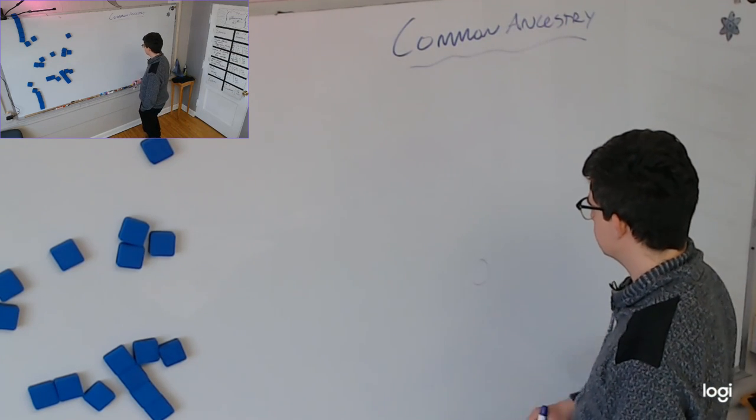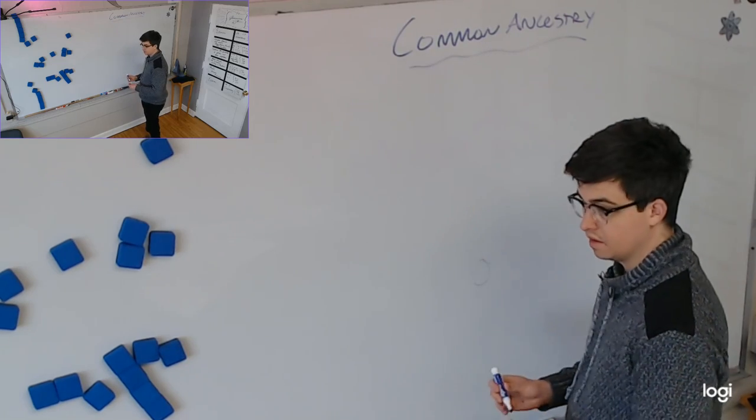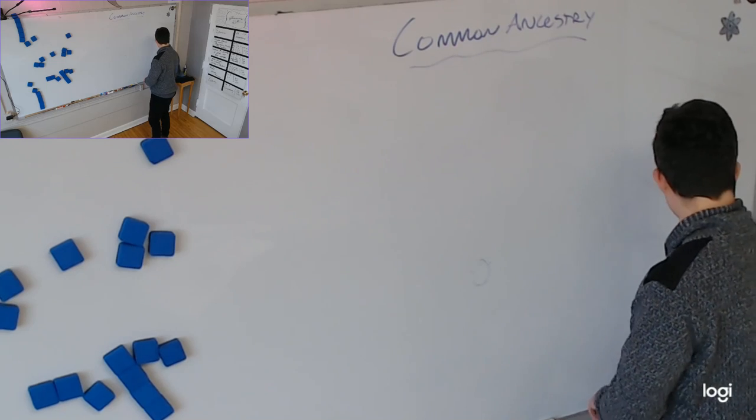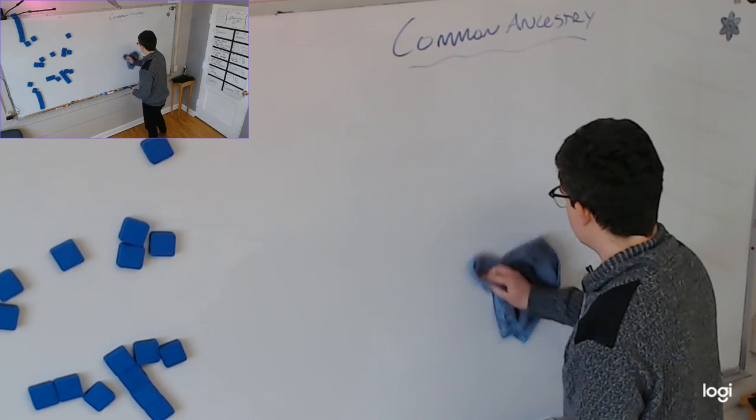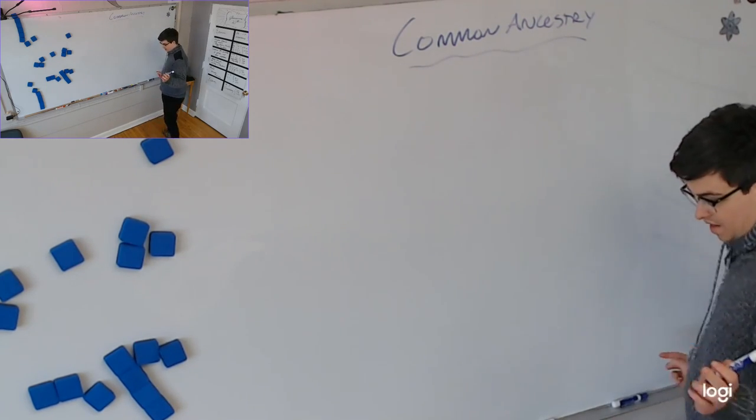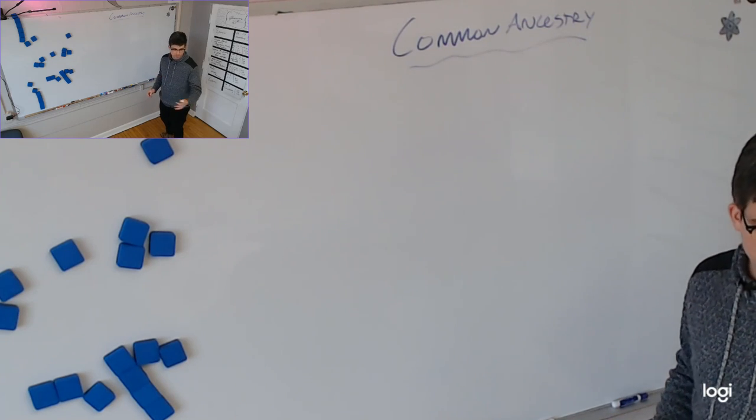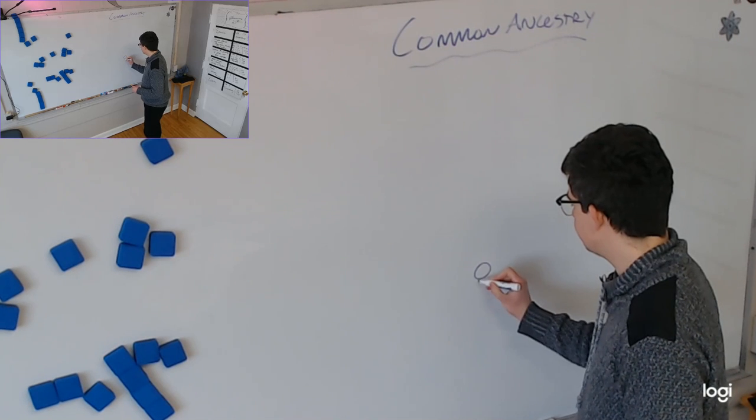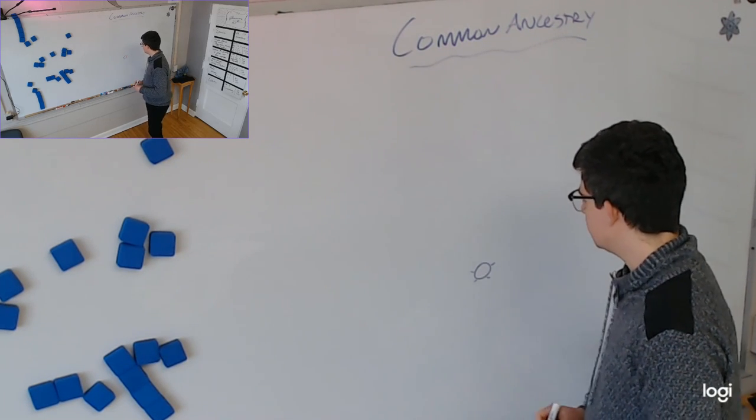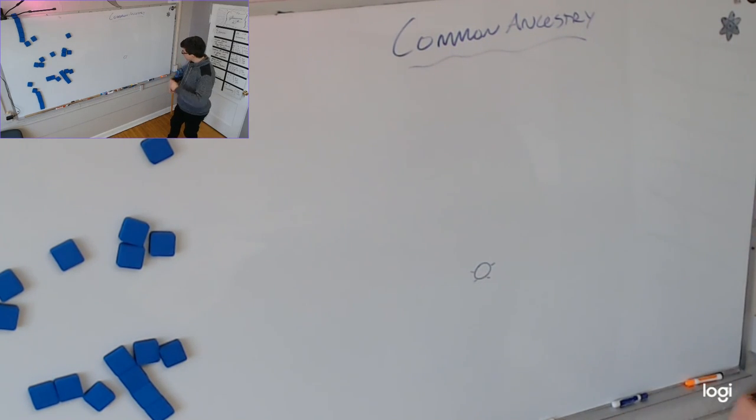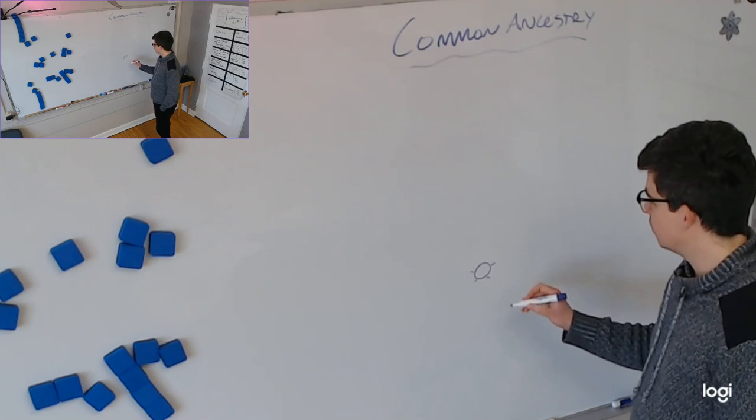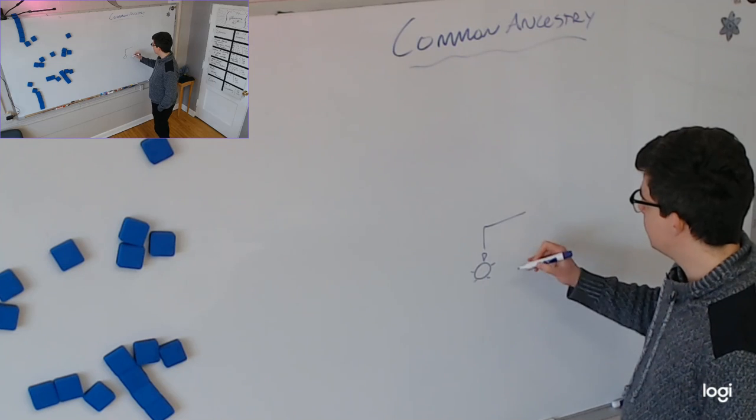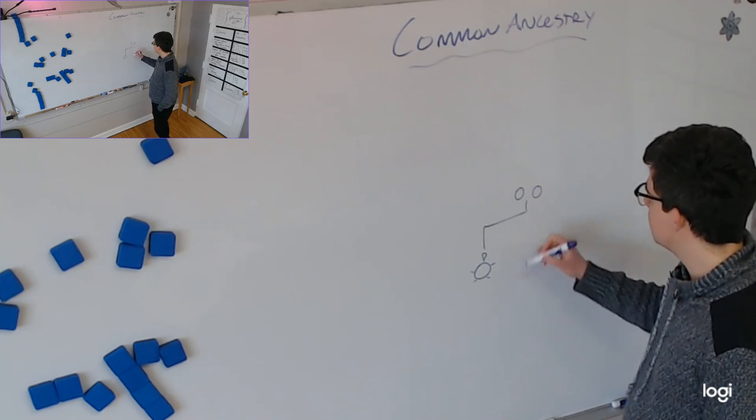This is what you look like. You have four legs. Here's your head. And you came from parents, presumably. They looked like this. So in your past, you had parents.